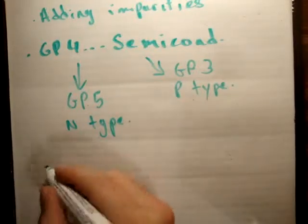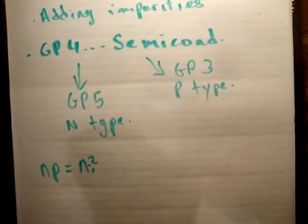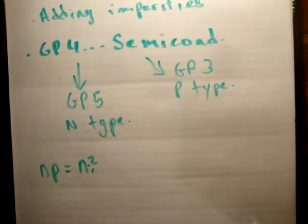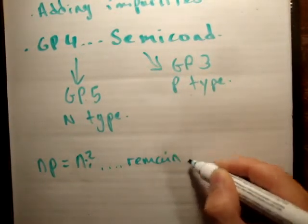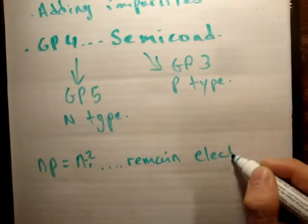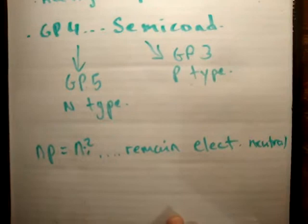The equation n times p equals ni squared remains unchanged during doping, and the material will remain electrically neutral. That's very important.